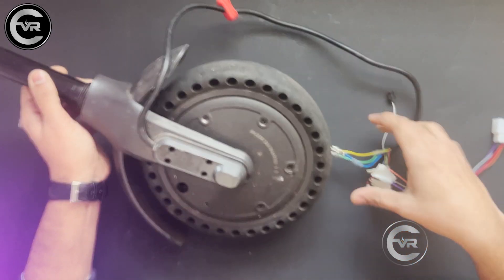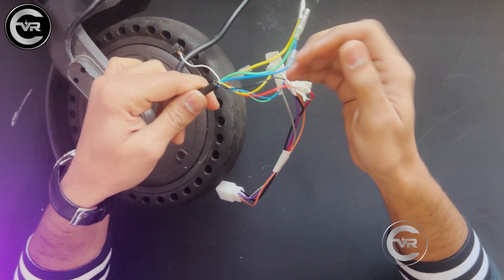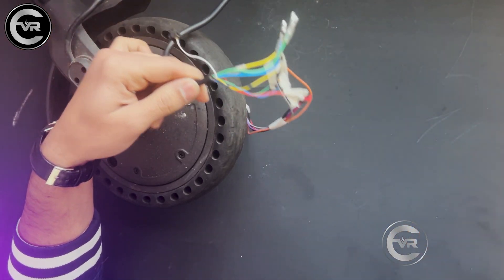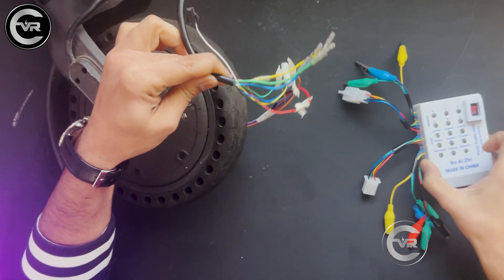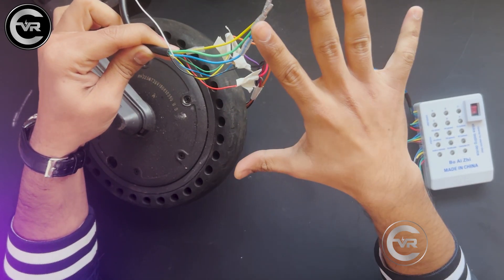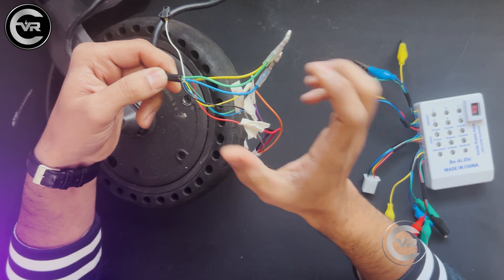So I have an EV scooter motor. These are the wires which come out of it, and these are just the hull wires. I use an extension to connect to the tester we have, and there are these three phase wires. Every motor has these five hull wires and three phase wires, so eight wires in total.